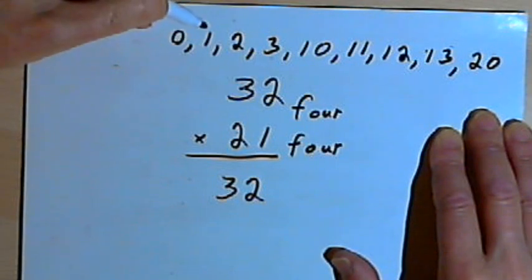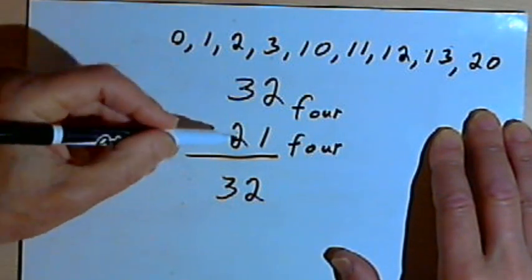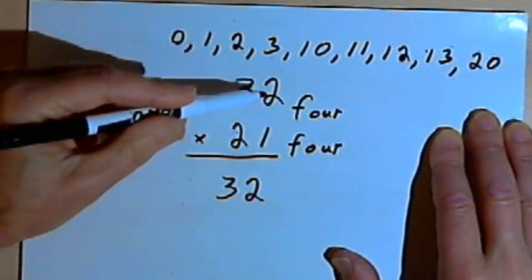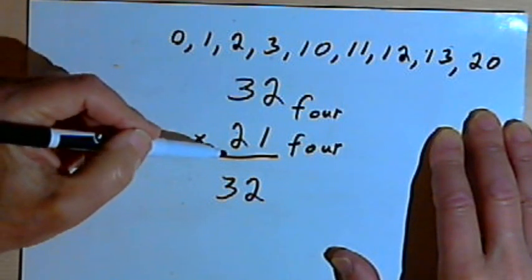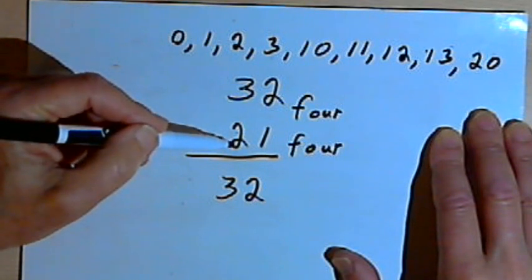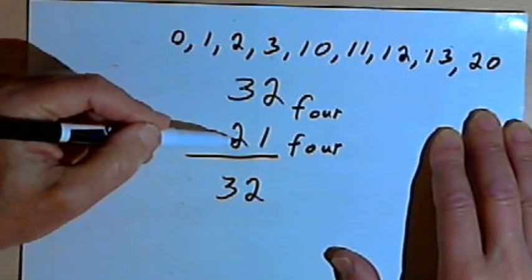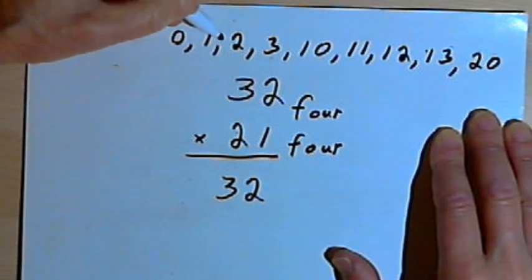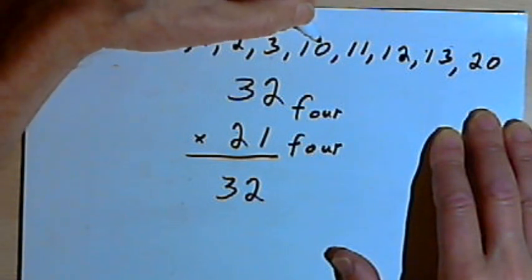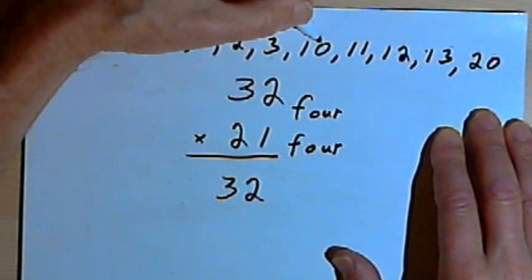I've probably got enough numbers now to go on with the problem. So I want to do 2 times 32. Well, for 2 times 2, since multiplication is the same as repeated addition, I'm going to just add 2 and 2. I'll add 2 2s. So I can start at 2 on my list of numbers, count up 2 more numbers, so 2, 3, 10. And that means 2 times 2 is going to be 10 in base 4.